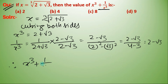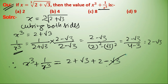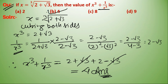Therefore, x cube plus 1 upon x cube equals (2 plus root 3) plus (2 minus root 3). The root 3 terms cancel, giving 4 as the answer. So option B is the correct answer.